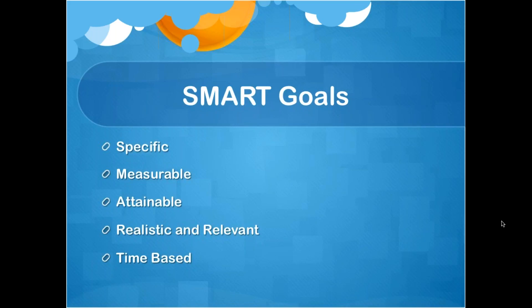Don't just say "I want to teach classes" — how do you want to teach classes? Why? What kind? How often? Specific goals need to be detailed. The M is for measurable — your goal needs to be something that can be measured, monitored, and tracked so it's not forgotten. For instance, if you want to teach classes, you should be able to go back and see whether you did it and how it went. A is for attainable — is it something you can actually reach and do?